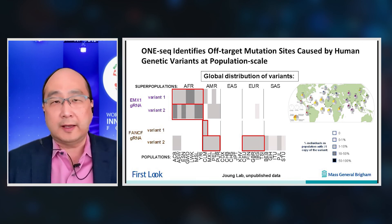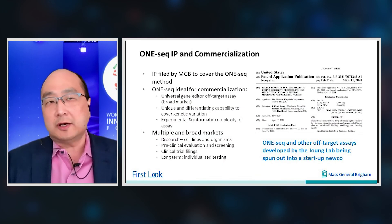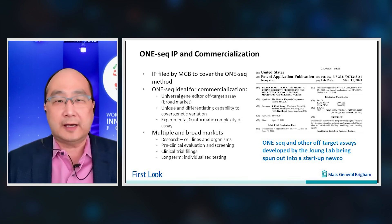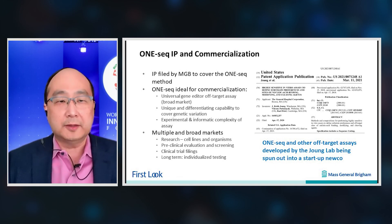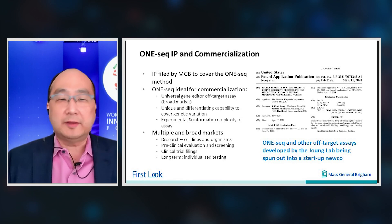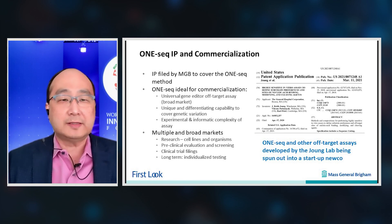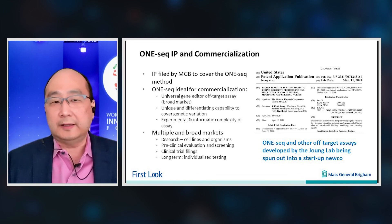The important takeaway is that OneSeq can identify variants that show increased off-target mutation frequencies in human cells, and some of these variants are actually enriched in specific human populations or superpopulations — which becomes increasingly important as one starts to think about applying gene editors to larger patient populations. We filed IP to cover the method and think it's ideal for commercialization, both because it's universal and because it has the unique ability to account for genetic variation. There are multiple broad markets for this assay: research, preclinical evaluation and screening of different editors, clinical trial filings, and long-term individualized testing.